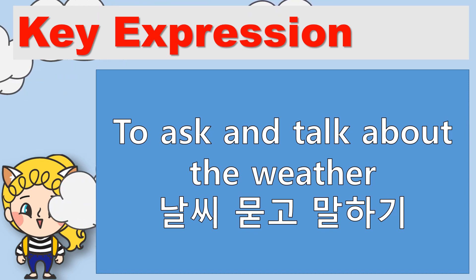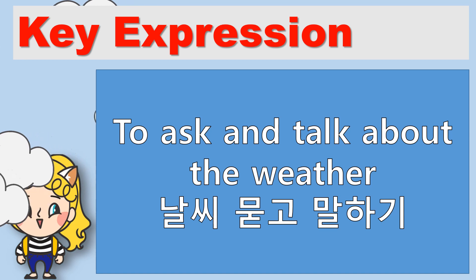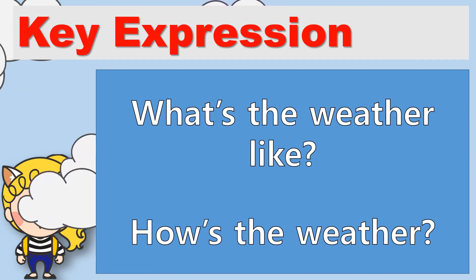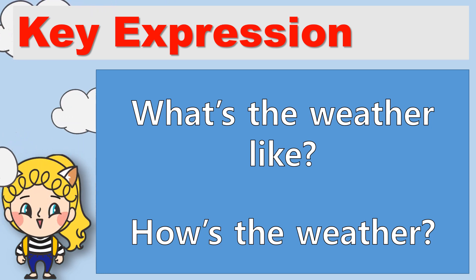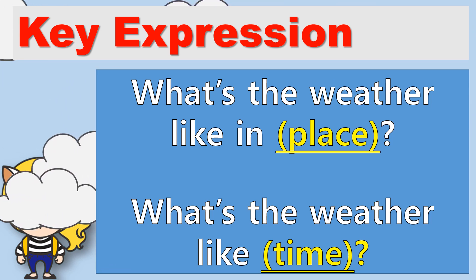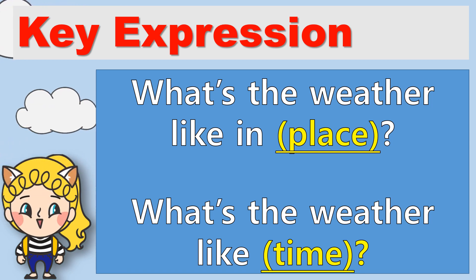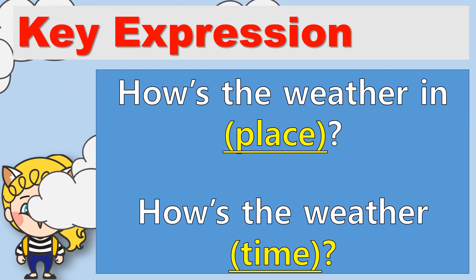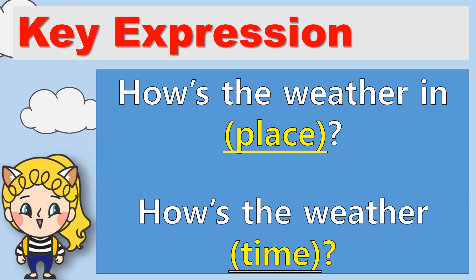Now let's look at our key expressions to ask and talk about the weather. We have two sentences to ask about the weather. First: what's the weather like? And how's the weather? You can use place or time to ask more. What's the weather like in this place? Or what's the weather like at this time? You can do the same for how's the weather — how's the weather in this place, and how's the weather at this time?